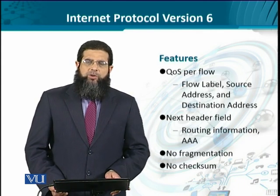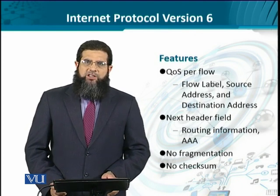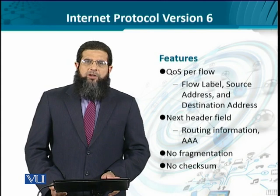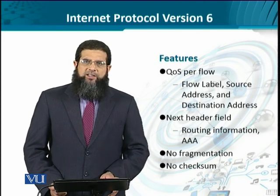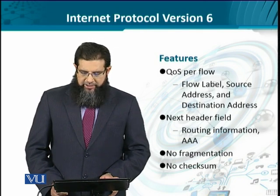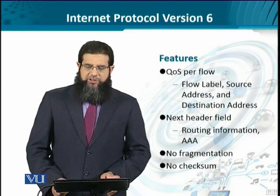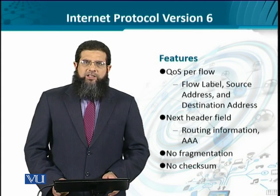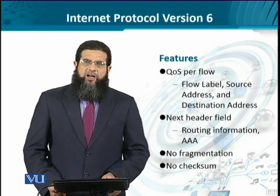IP version 6, with its different packet format, comes with unique attributes and features which make it significantly different from IP version 4. For instance, it has a provision for per-flow quality of service. Quality of service in IP version 4 was assigned on the basis of the type of service field, but that was on a per-packet basis. IP version 6 provides a mechanism based on the flow label field in the IPv6 header, combined with the source and destination addresses. With a concatenation of all three, a flow is established between a user and its endpoint, and that particular flow is given a certain quality of service treatment.